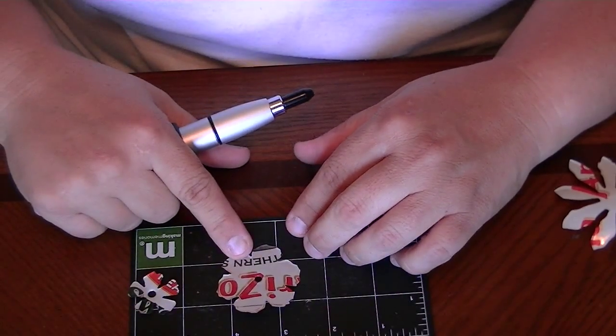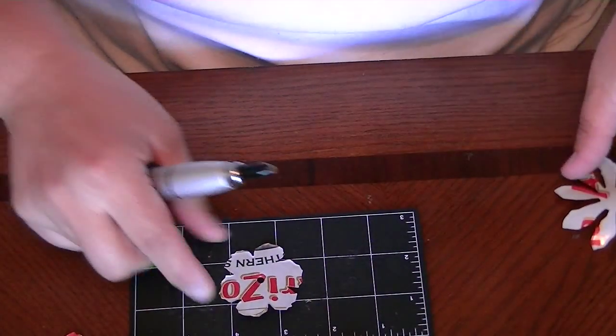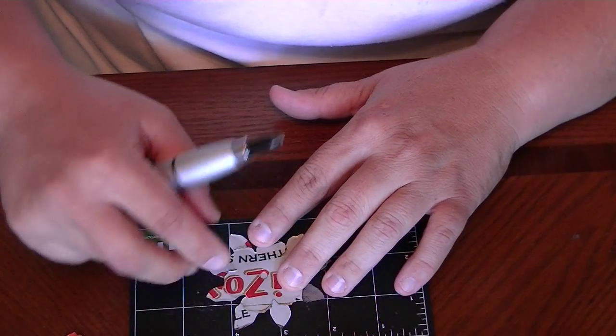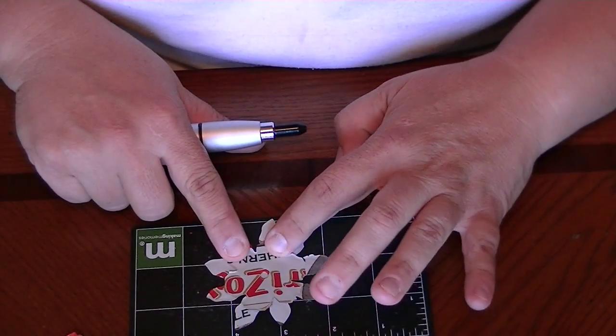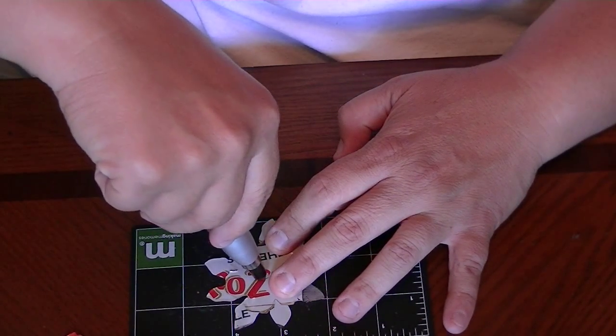And there's our hole. Move the small one to the side and take your next piece and do the same thing. Line it up how you want it and then make your hole.